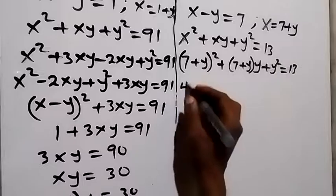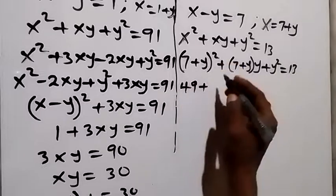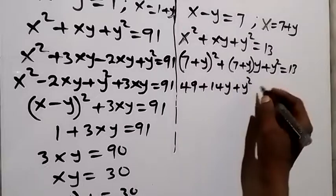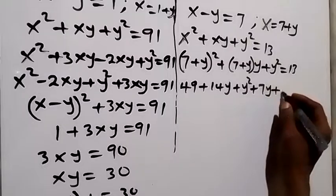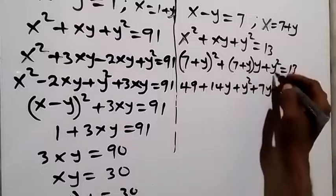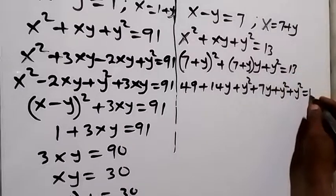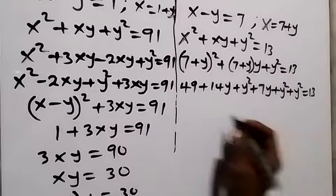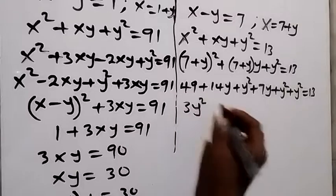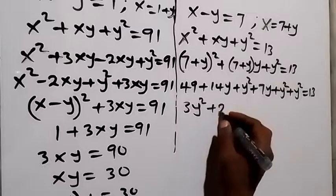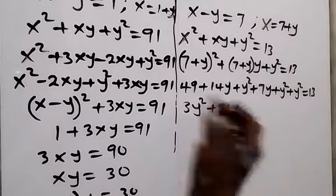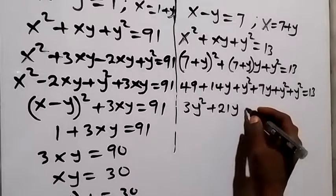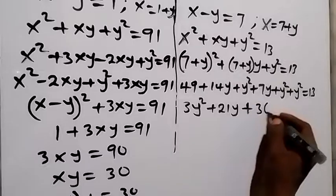Expanding: 49 plus 14y plus y squared, plus 7y plus y squared, plus y squared equals 13. Combining like terms: 3y squared plus 21y plus 49 equals 13. Taking 13 to the other side: 49 minus 13 gives plus 36, so we have 3y squared plus 21y plus 36 equals 0.